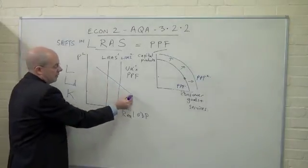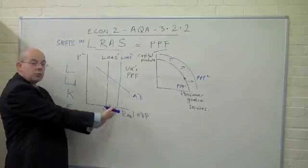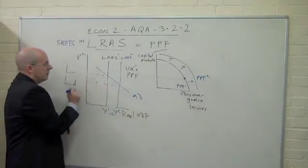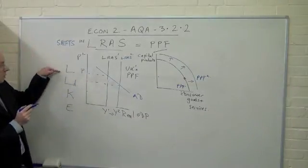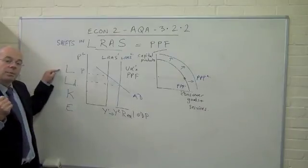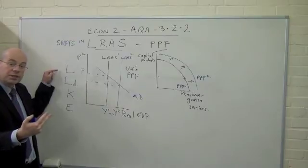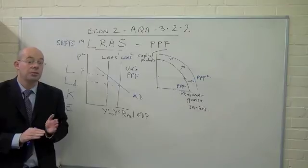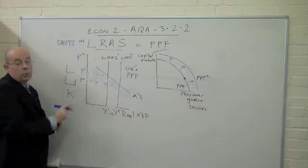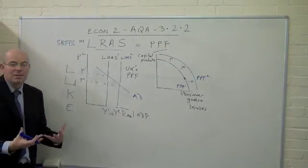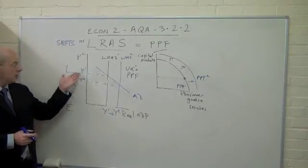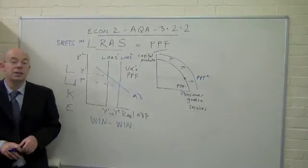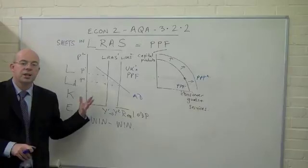It looks great in theory — we get a higher sustained rate of economic growth, greater potential output, more firms setting up in business. It also looks great in the sense that with more competition, maybe migrant labour coming to Britain, maybe a higher-qualified workforce leaving school and university, a more competitive labour market keeps wage pressures low. Firms on average are not putting their prices up as much as before, so we see lower inflationary pressure. More businesses starting up in a more competitive environment would again keep inflation low. So it looks like a win-win scenario.